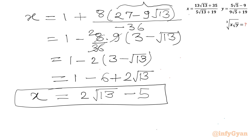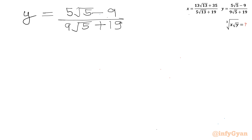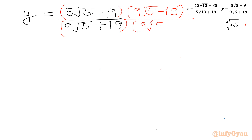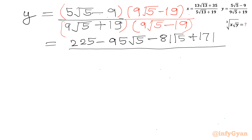Now we will simplify y also. So I will write y equal to (5√5 − 9) divided by (9√5 + 19). Let us rationalize directly. So I will write in the numerator and denominator (9√5 − 19). Let us multiply the numerator and denominator brackets. I will write: 225 − 95√5 − 81√5 + 171 over 405.